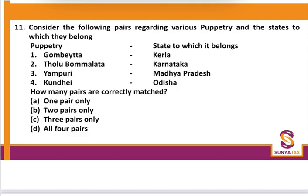Consider the following pairs regarding puppetry and the states to which they belong: Gombayata — not from Kerala, it is from Karnataka; the second form is not from Karnataka but from Andhra Pradesh; Yamapuri — not from Madhya Pradesh, it is from Bihar; Kundayi — from Odisha. So only one pair is correctly matched.